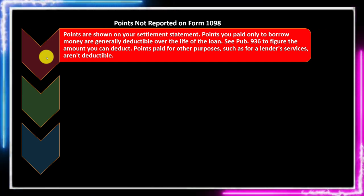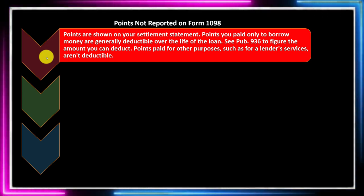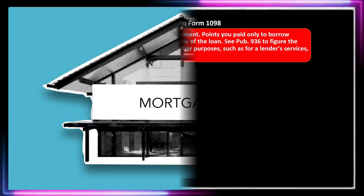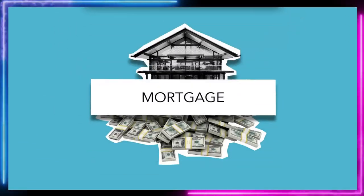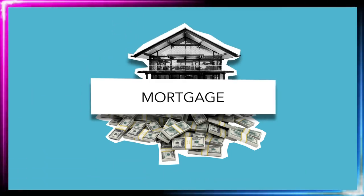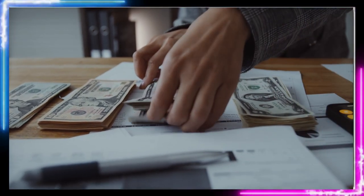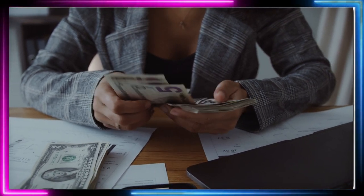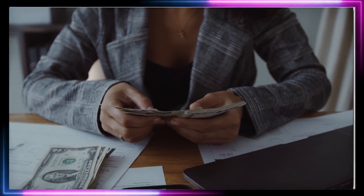Those two big items could push people over the standard deduction. Now we're getting into the weeds a bit on how you would report mortgage interest. Normally it's straightforward because you'll have the Form 1098 and can record it fairly easily. But we have a couple of caveats like loan limits, and now we have the concept of points, which add a wrinkle in terms of deductibility. Points are shown on your settlement statement.